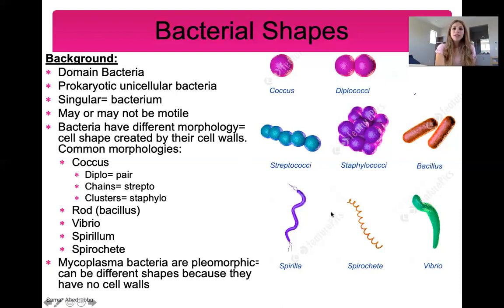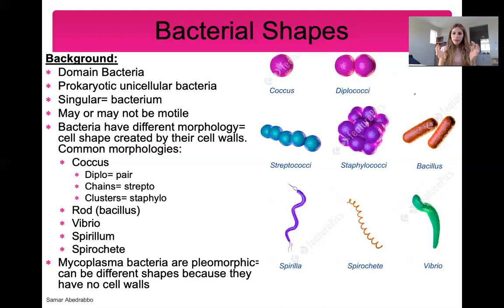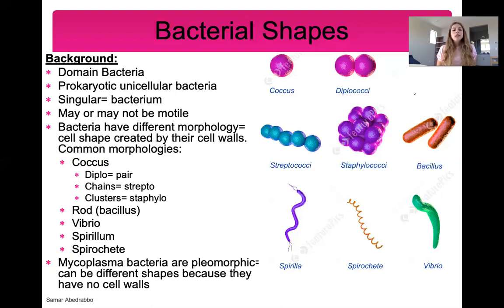The shape of bacteria — the morphology — is determined by the cell wall. In bacteria, the cell wall is made up of peptidoglycan, which sits outside the cell membrane. The shape of that cell wall determines whether we see coccus or rods. Mycoplasma bacteria are an outlier — they do not have a cell wall, so their shape is pleomorphic, meaning they can come in many different shapes. For most bacteria, the cell wall determines their morphology.